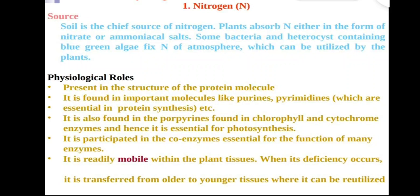Nitrogen is present in the structure of the protein molecule and participates in the synthesis of co-enzymes essential for the function of many enzymes. It is readily mobile within plant tissue, so when deficiency occurs, it is transferred from older leaves to younger leaves, and deficiency symptoms are seen in older leaves first.